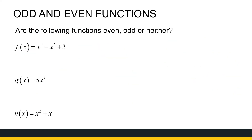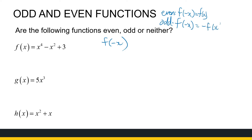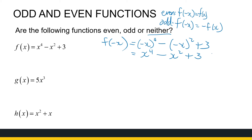Let's apply this to some other functions where we don't have the graphs. We've got some polynomials. If f of x is x to the power of 4 minus x squared plus 3, we want to check: is it even, odd, or neither? We compute f of minus x, which is minus x to the power of 4 minus minus x squared plus 3. That gives us x to the power of 4 minus x squared plus 3, which is exactly f of x. So this function is even.